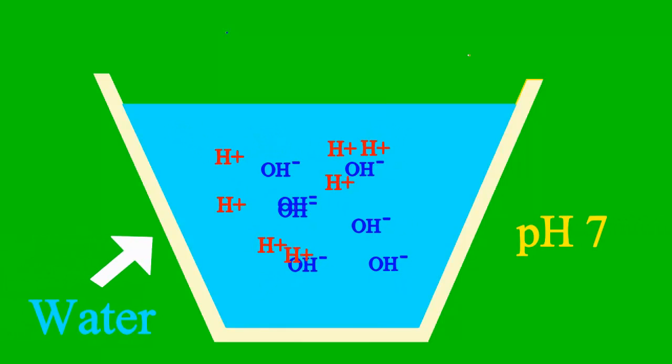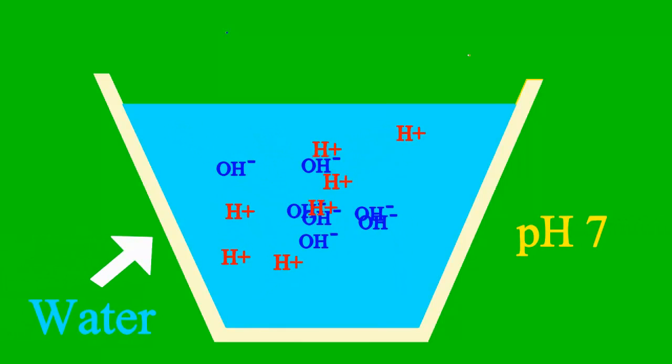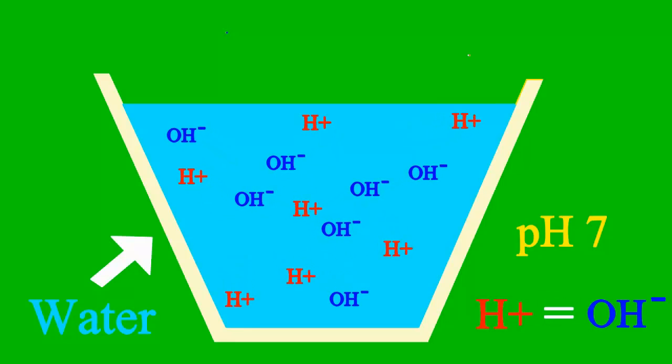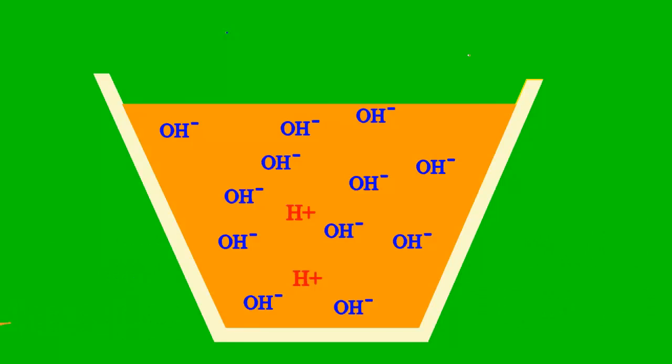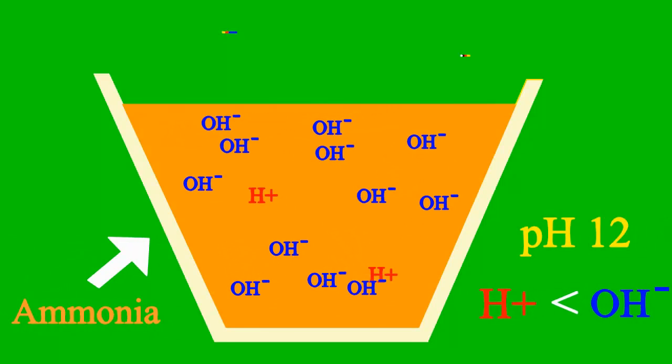When the pH is 7, it's a case where the sample is neither an acid nor base. But less than 7, it's an acid, we say more than 7, it's a base all the way.